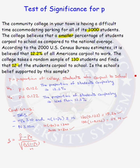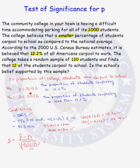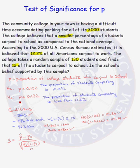P, our population parameter, equals the proportion of college students who carpool to school. Our null hypothesis is that P, the proportion of students carpooling to school, is equal to 0.122 or 12.2%. The alternative is a one-sided alternative because the college believes that the percentage carpooling to their college is less than the national average. The alternative is that P is less than 12.2%.